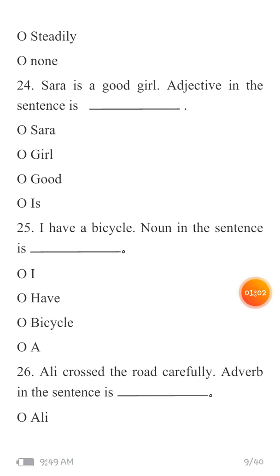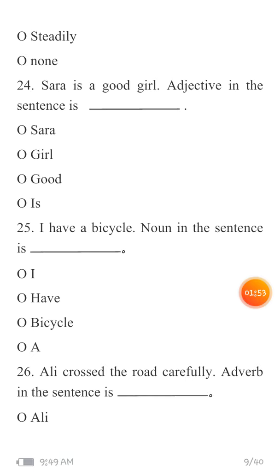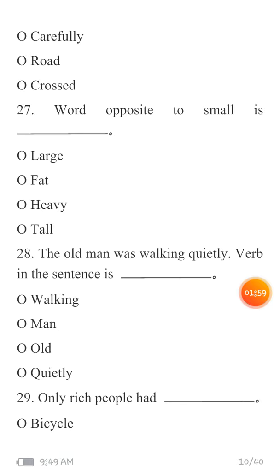MCQ 26: 'Ali crossed the road carefully.' Adverb in the sentence is — Ali ne bohat ehtiyat se road ko cross kiya. You have to identify the adverb. Adverbs are words that tell us about verbs — how the action was done, whether it was slow or fast. Your options are: Ali, carefully, rode, and crossed.